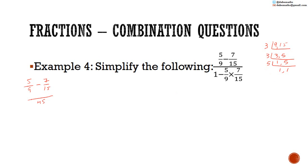We write both fractions as fractions over 45. 9 multiplied by 5 is 45, so we multiply 5 by 5 to get 25. 15 multiplied by 3 gives 45, so we multiply 7 by 3 to get 21. 25 minus 21 is equal to 4. So we get 4 over 45.